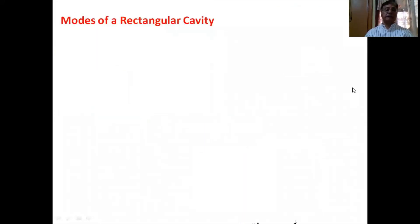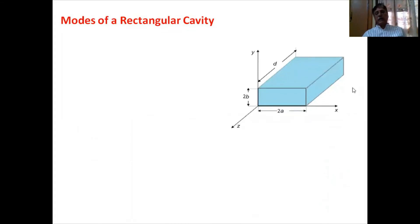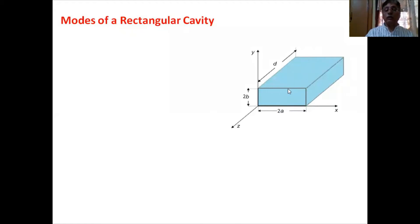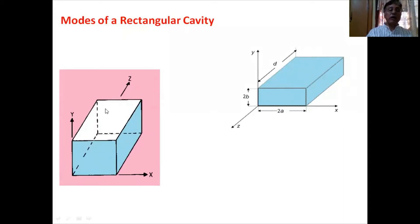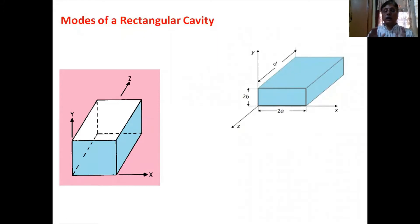The rectangular cavity is shown in three dimensions in the XYZ plane. When electromagnetic waves propagate inside this rectangular cavity, they reflect from both walls — the front wall and the back wall. After repeated to-and-fro reflections, a steady state is reached where the superposition of these waves forms a standing wave pattern.